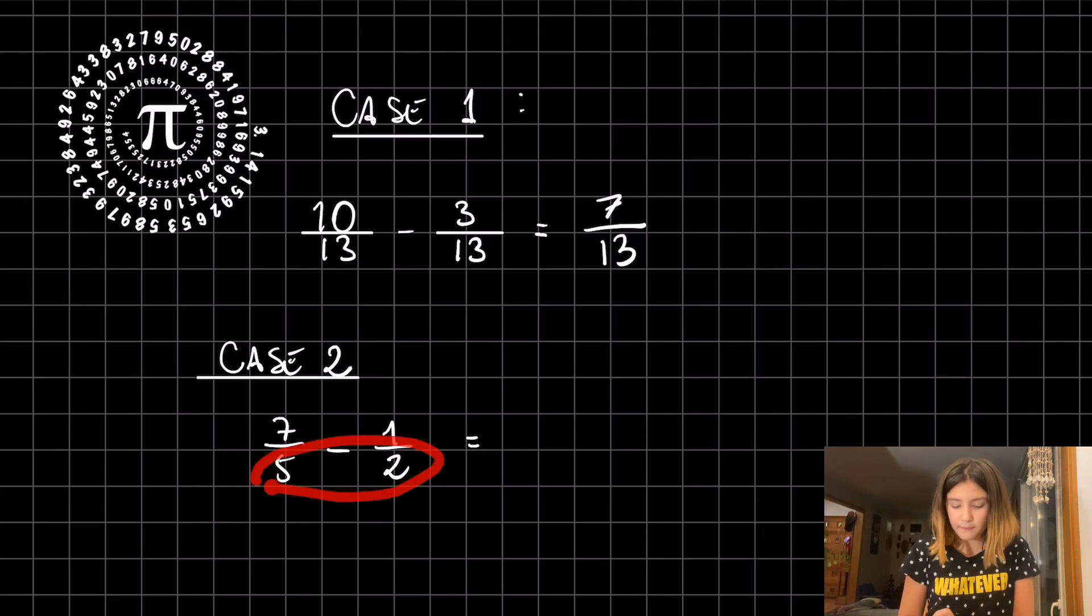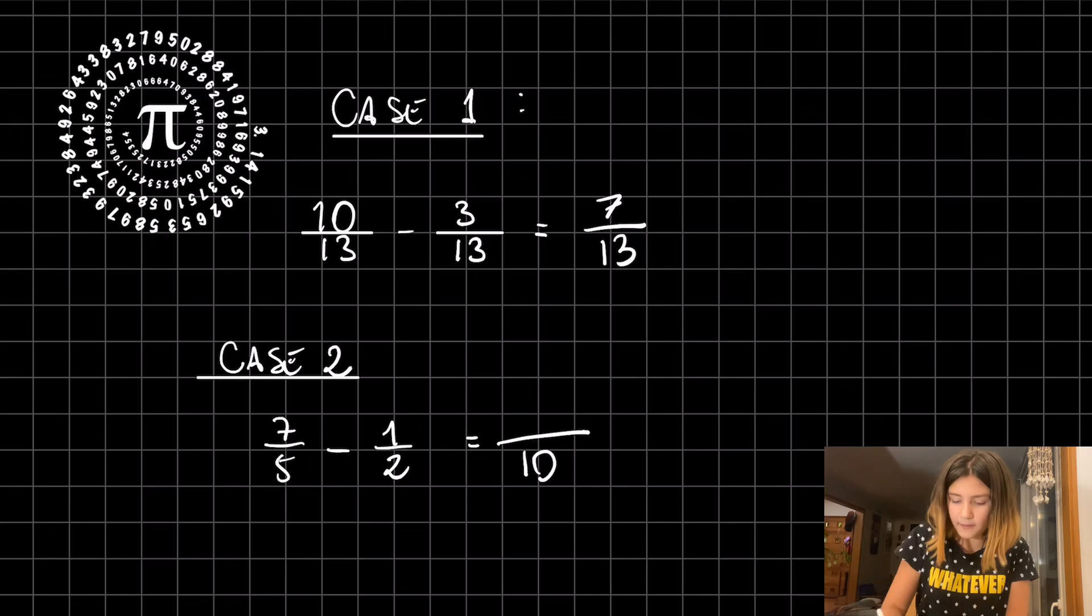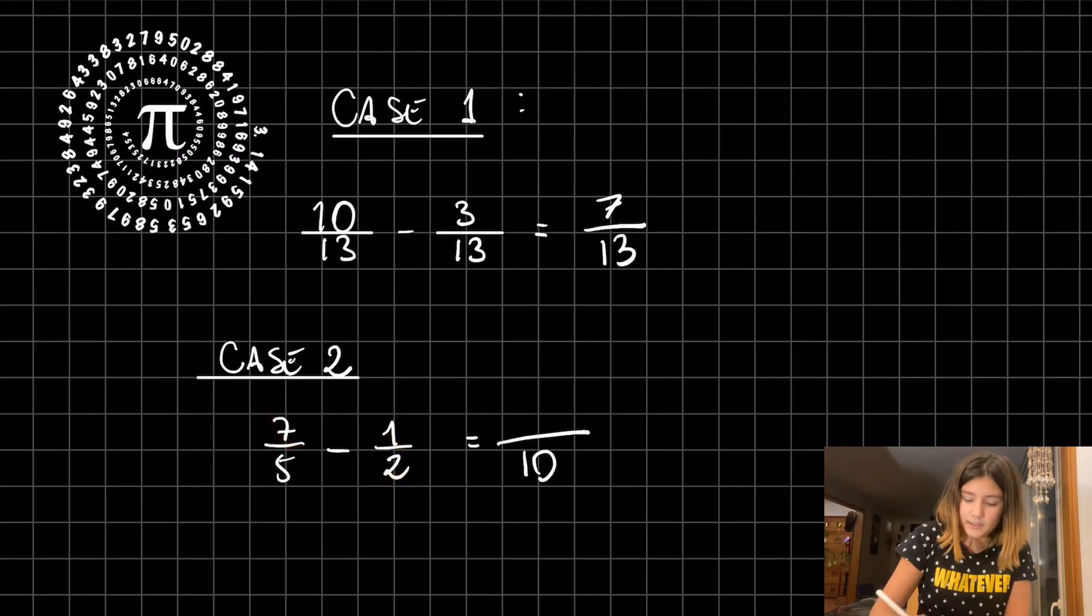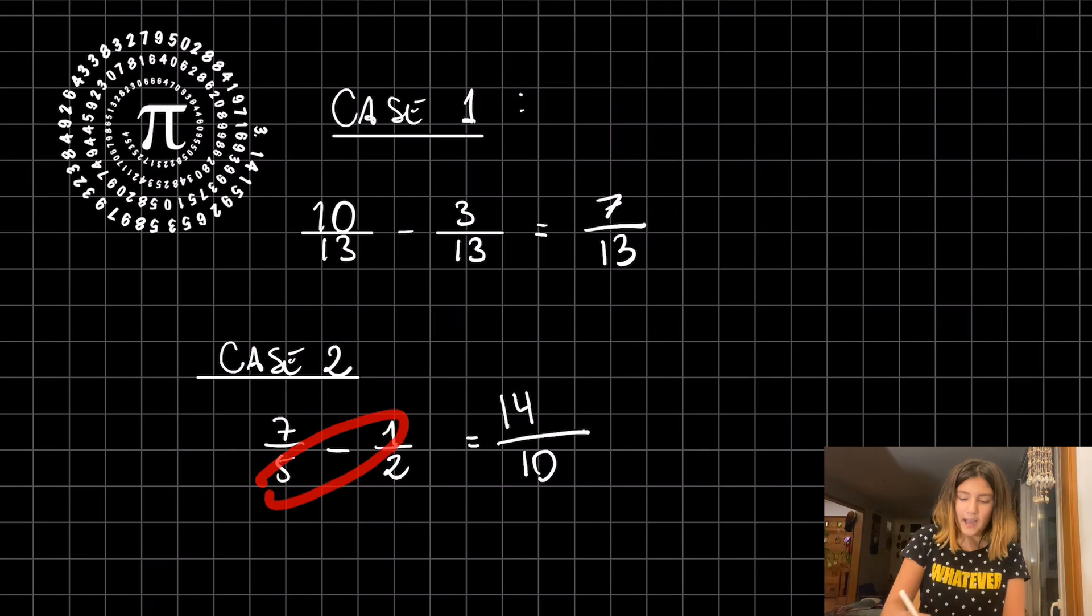Here we have to multiply 5 times 2, which is 10. Then we multiply 2 times 7, which is 14. Then we multiply 5 times 1, which is 5.